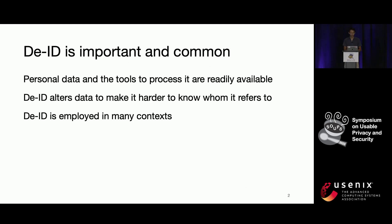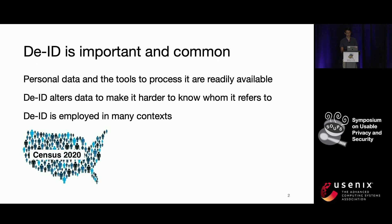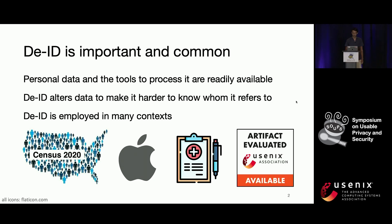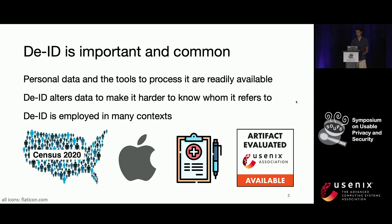De-identification is employed in many contexts. It's been used in the U.S. census, by companies, and by health researchers. And it's sometimes used by computer scientists and social scientists like us for when we want to or need to publish data.